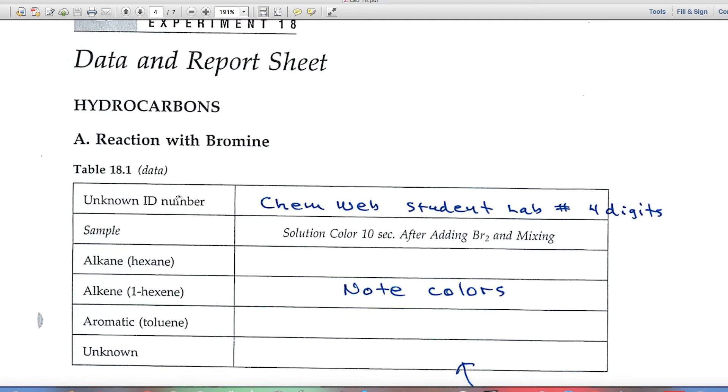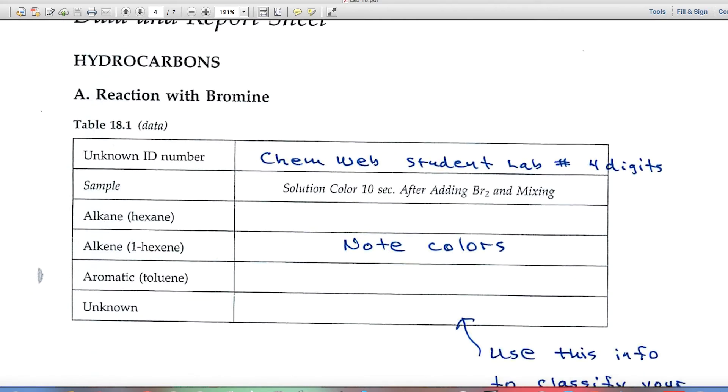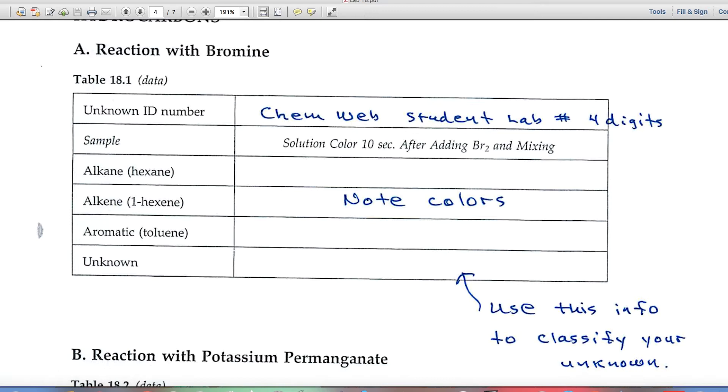The first blank asks for your unknown ID number, and you'll get this when you enter ChemWeb. It's the student lab number, it's four digits long. And then when you carry out the reactions, for an alkane, you'll use hexane.